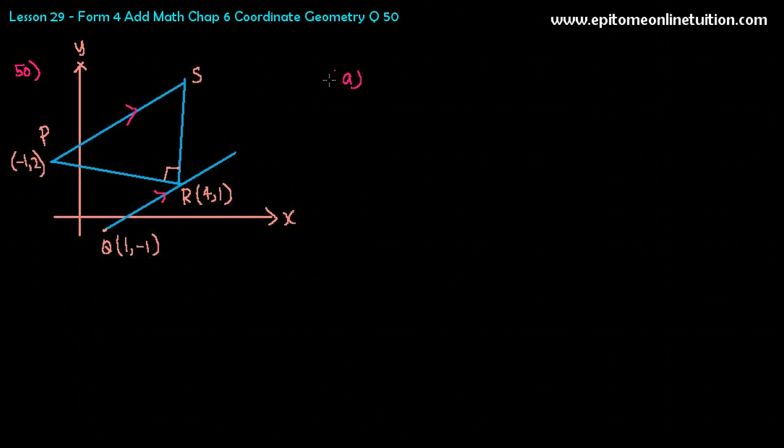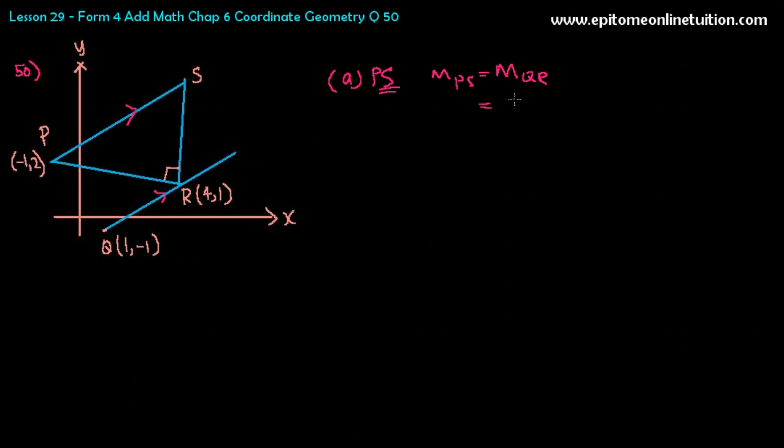Remember, in order to find equation of a straight line, you need the gradient of the line, and you need a point, which you have. Let's look at PS first. So for PS, we have a point. All you need is the gradient. And how can you find the gradient of PS? Remember, it is parallel to QR, so you can find the gradient of QR, because there are two points given. So M of PS is equal to M of QR. And M of QR would be 1 minus minus 1, that's 1 plus 1, over 4 minus 1. So that's 2 over 3.